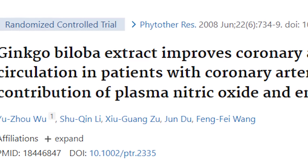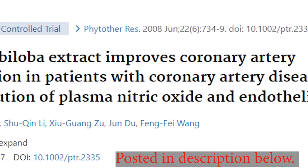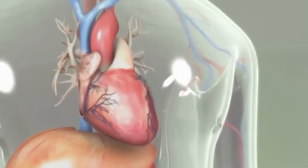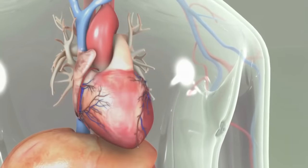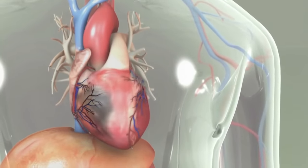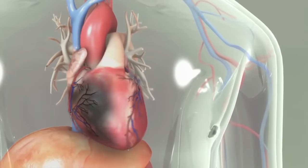In a PubMed study, ginkgo biloba extract improves coronary artery circulation in patients with coronary artery disease. The study shows that patients with coronary artery disease, coronary blood flow, the arteries that are impaired, not allowing blood to get to the heart due to the imbalanced vasoactive substance such as nitric oxide.